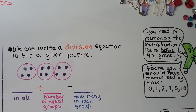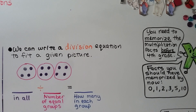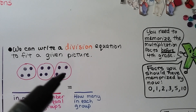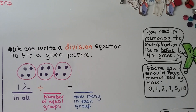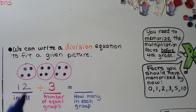We can write a division equation to fit a given picture. Here we have counters in 3 groups with 4 in each group. To write our division equation, we need to know how many in all - counting gives us 12. So 12 is our dividend. We have our division sign. The number of equal groups, our divisor, is 3. It is equal to the answer, the quotient - how many are in each group, which is 4. Our division equation is: 12 divided by 3 is equal to 4.